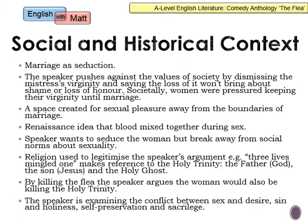It was also a Renaissance idea that blood mixed together during sex. At the time, medical knowledge was limited and blood was seen as almost synonymous with semen. So the idea of blood in this poem becomes a motif representing togetherness between the two people. The speaker wants to seduce the woman but break away from social norms about sexuality, putting societal expectations to one side and separating them from the act of sex.